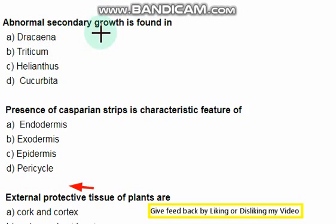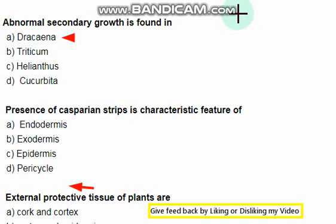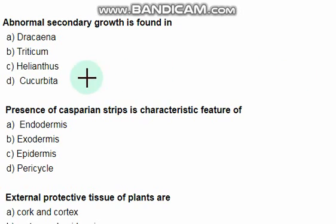Abnormal secondary growth is found in — option A is correct: Dracaena. In this plant, abnormal secondary growth is found.